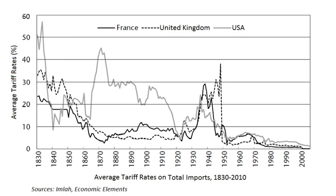In 1800, Great Britain with about 10% of the European population provided 29% of all pig iron produced in Europe, a proportion that reached 45% in 1830. Industrial production per capita was even more significant — in 1830 it was 250% higher than in the rest of Europe, compared to 110% in 1800. In 1846, the industrialization rate per capita was more than double that of its closest competitors such as France, Belgium, Germany, Switzerland, and the United States.